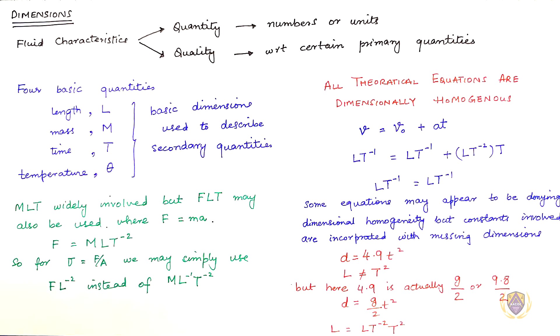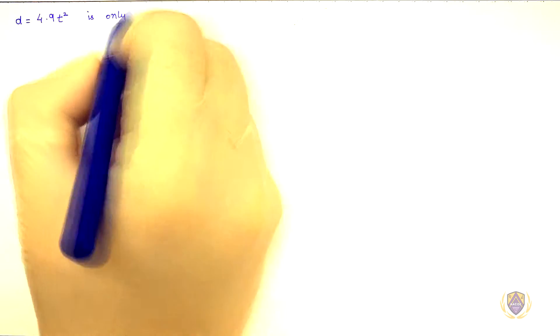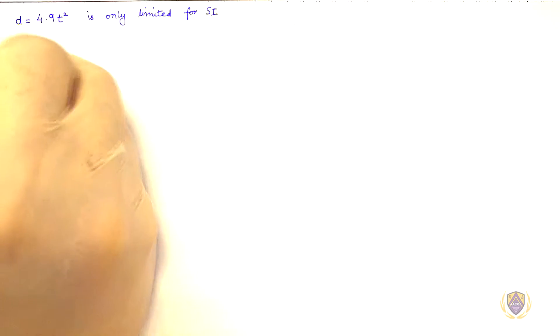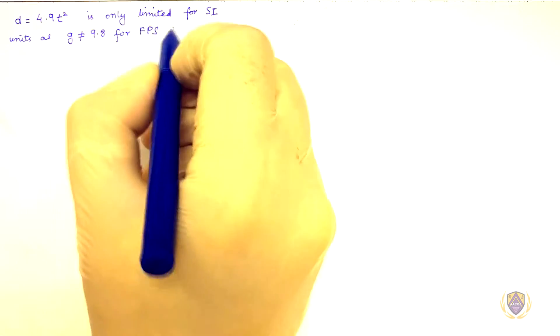Therefore, L equal L and the equation becomes dimensionally homogenous. This equation is only limited for SI units as G is not equal to 9.8 for FPS system.